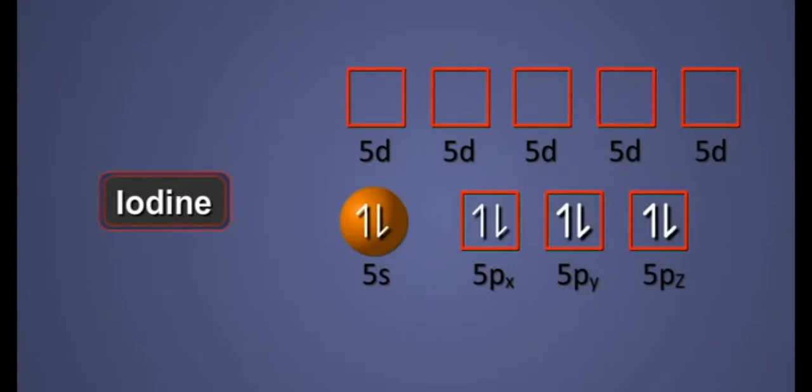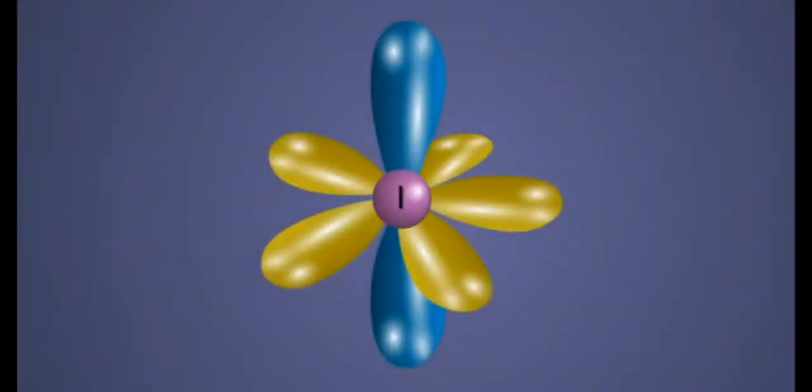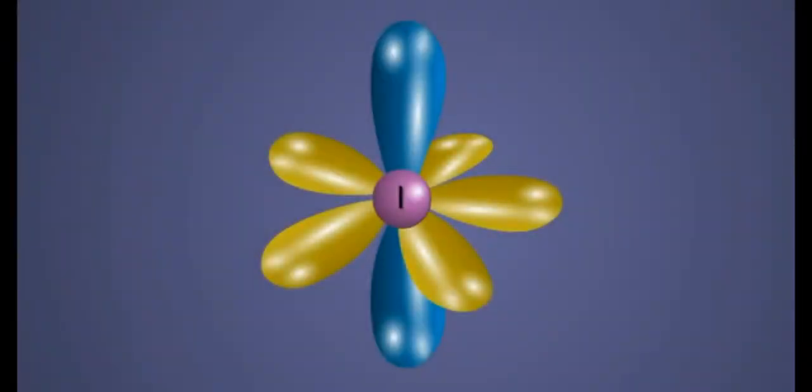In IF7, to make 7 bonds of iodine atom, 1S and 1P electrons are promoted to the higher vacant 5D orbitals as shown in the animation. The 7 hybrid orbitals are then obtained, known as SP3D3 hybrid orbitals.